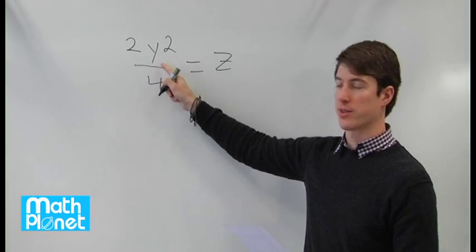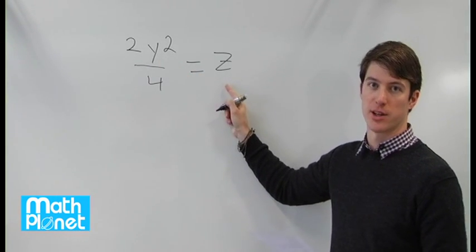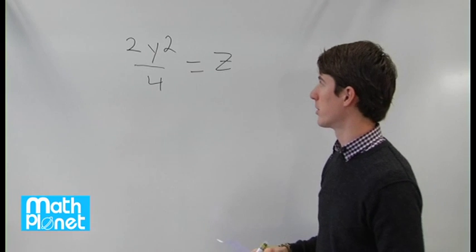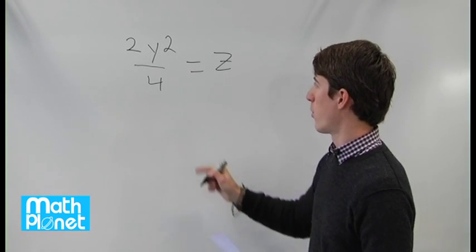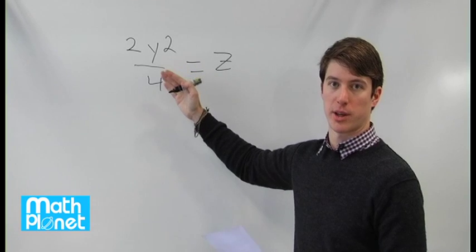We need to figure out what this y is such that this z is an integer or a whole number, a counting number. So one of the best ways to do it is to just start guessing.